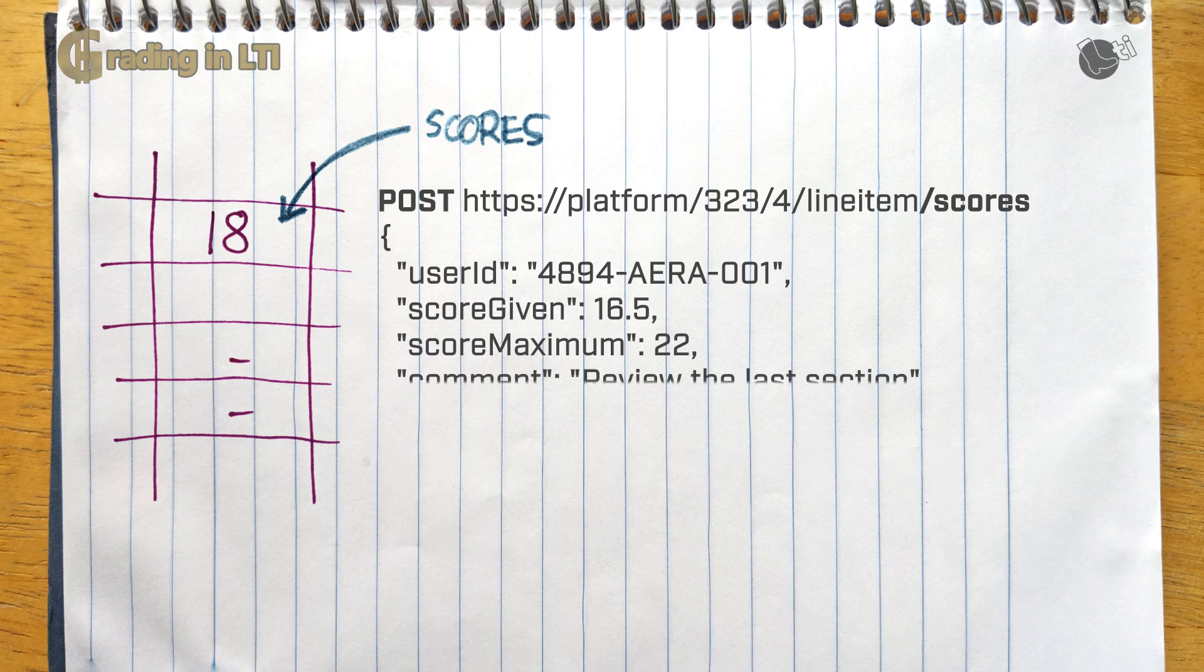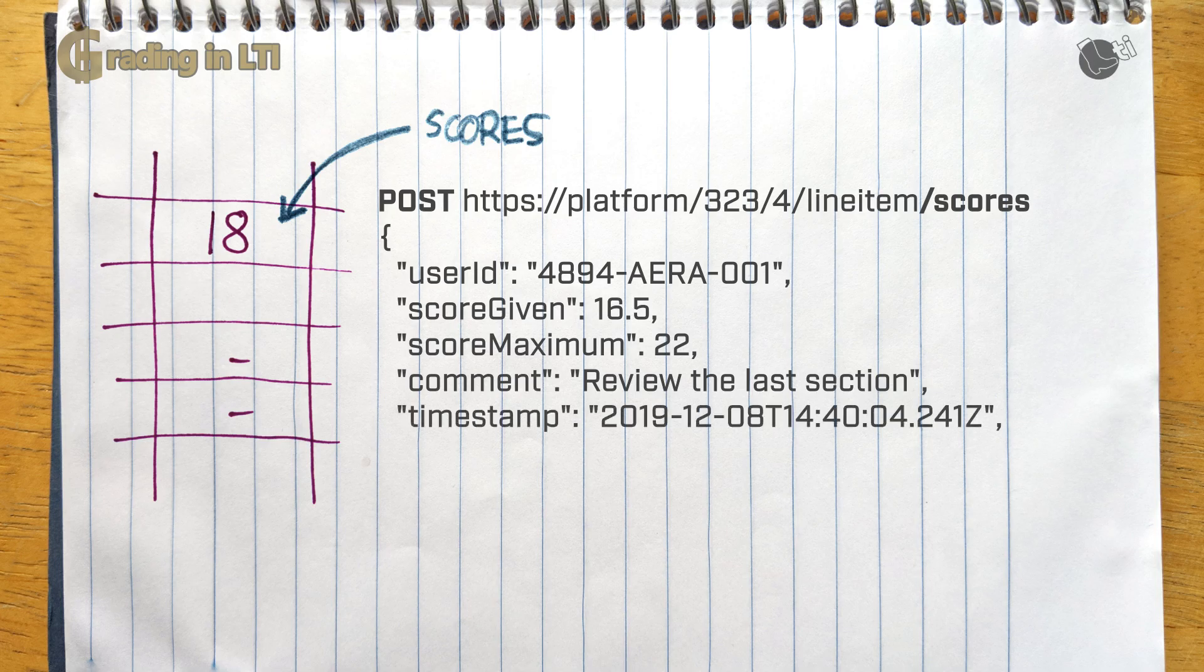Score payload must also always contain a timestamp of when that score was produced. A platform will ignore scores with the timestamps that predate the latest score it has recorded for that user and activity. So this offers some kind of security around out-of-order score posting.